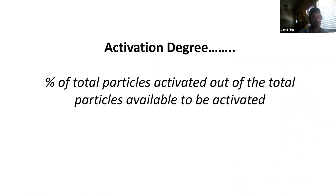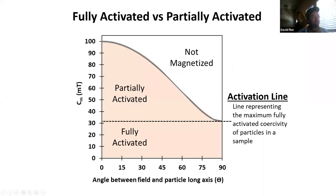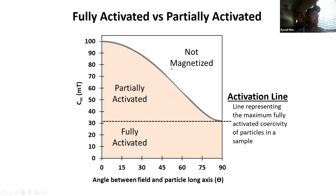Let's define activation degree as the percentage of particles activated out of the total number of particles available to be activated. For this activation degree you could think of a sample as a whole or think of individual coercivity windows. Here's that plot again — an ARM given to a peak of 100 millitesla did not fully activate the whole sample, so this ARM would be considered partially activating. The partially activated ARM can be subdivided into a lower fully activated portion and a higher coercivity partially activated portion.